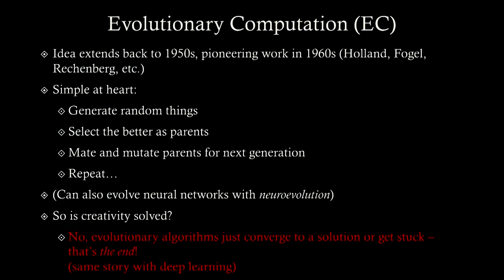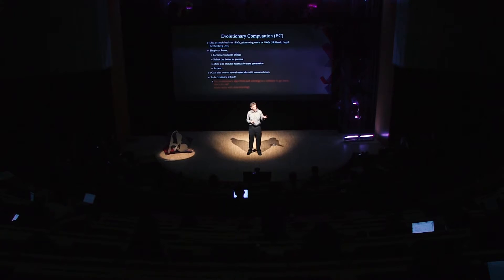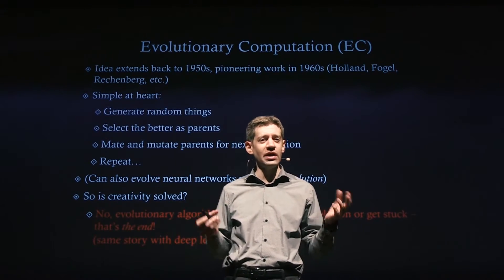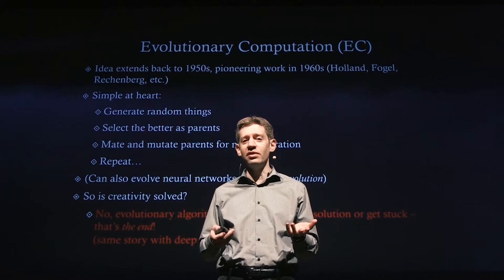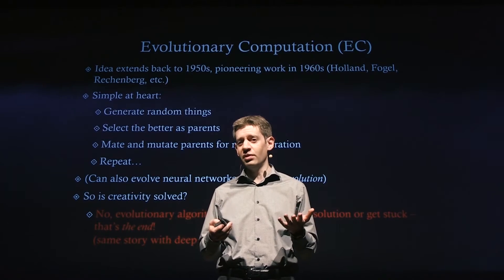Basically, inside the computer, it will generate some random things and then test them. Imagine we generate some robots inside of a simulator, then test them in some environment. The better ones we select and call them parents, then mate and mutate them — have them produce offspring inside the computer — to create a new generation. Then we repeat this loop.